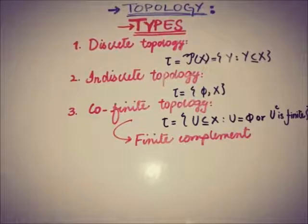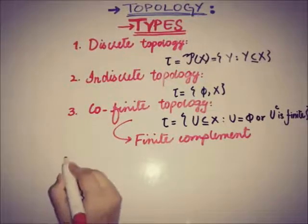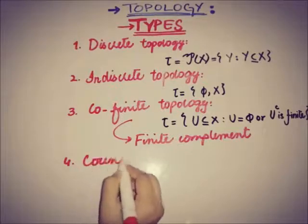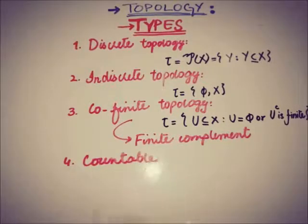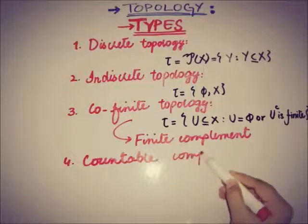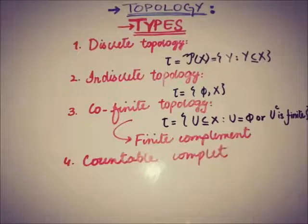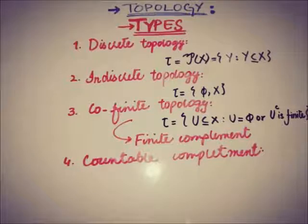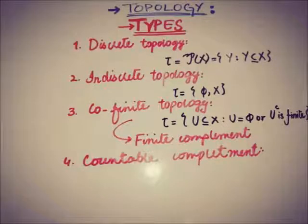Another type is countable complement topology. I'm not going into its definition because it requires understanding the concept of countability. Another type of topology is nested topology.